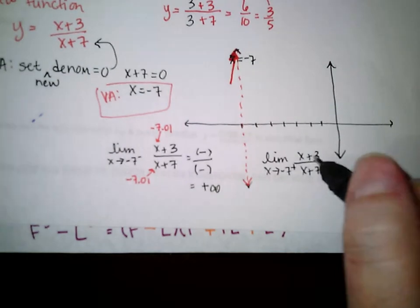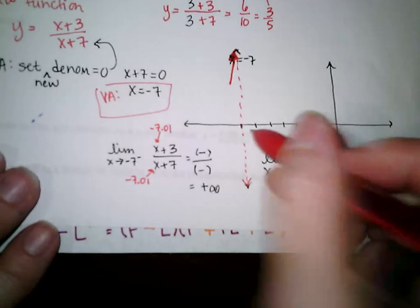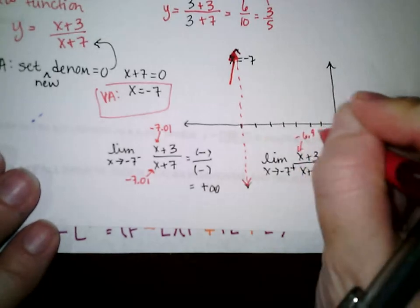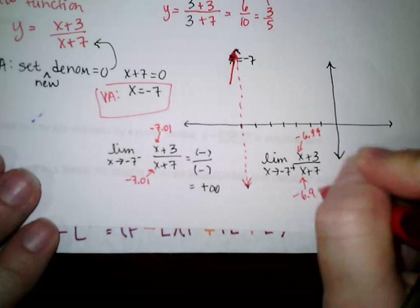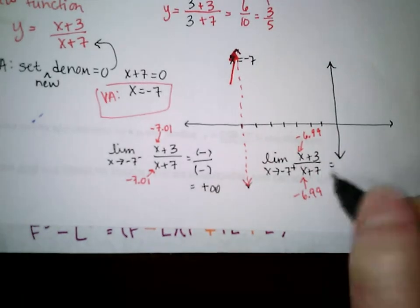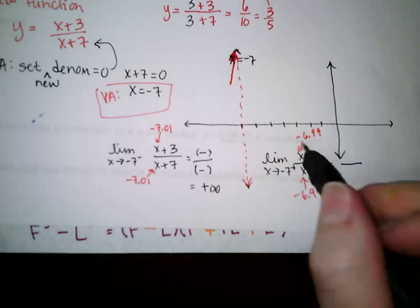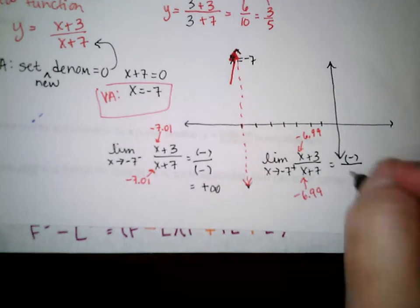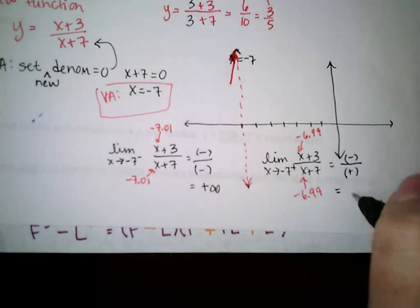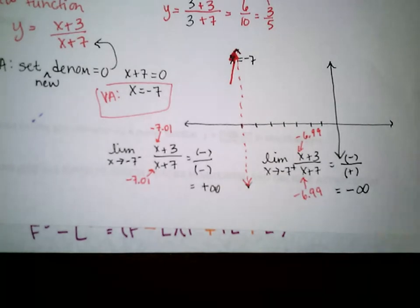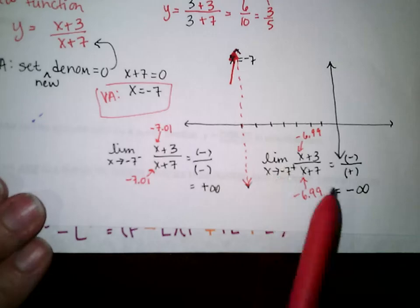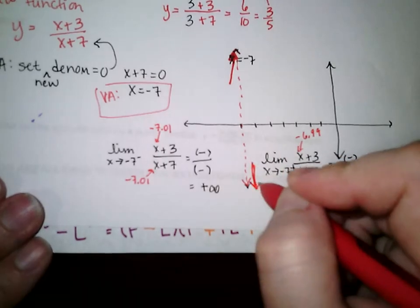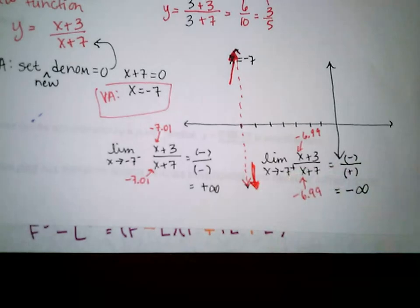On the right-hand side of negative 7, using a value like negative 6.99: negative 6.99 plus 3 is negative, and negative 6.99 plus 7 is positive. Negative divided by positive is negative, so that limit goes to negative infinity — the function heads down on the right side of the asymptote. These arrows will make more sense when we start putting everything together to actually draw a rational function. For now we're just doing the bits and pieces.